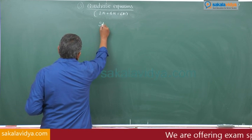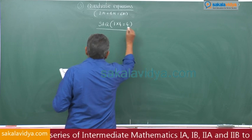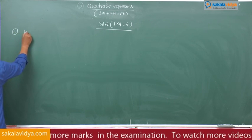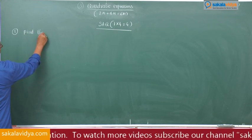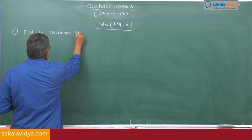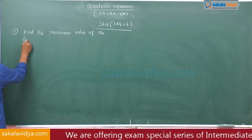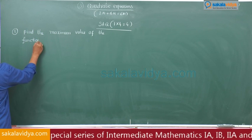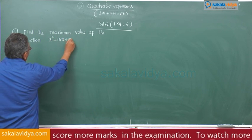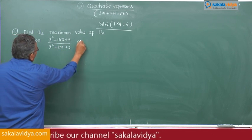Short answer questions, 1 into 4, 4 marks. First question: find the maximum value of the function (x² + 14x + 9) / (x² + 2x + 3) over ℝ.